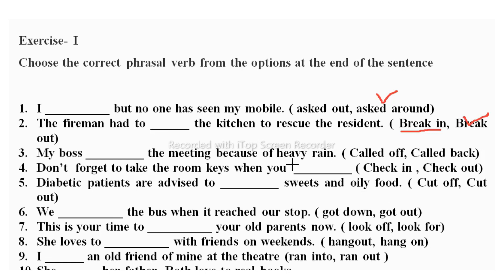Third sentence: 'My boss dashed the meeting because of heavy rain.' Options are 'called off' or 'called back.' 'Call off' means to stop or cancel something, while 'call back' means to call a second time. Since the boss cancelled the meeting, the correct answer is 'called off.'